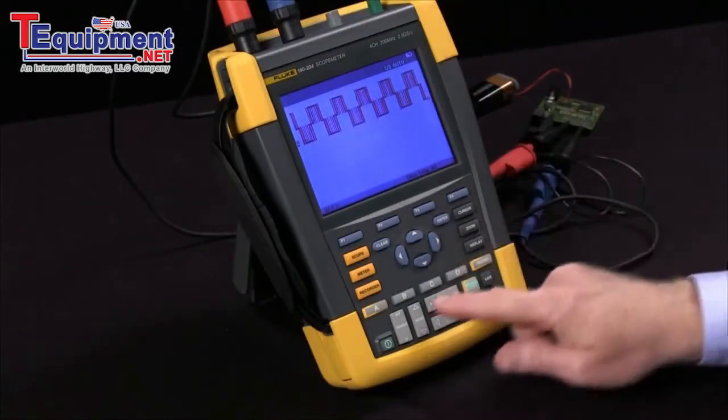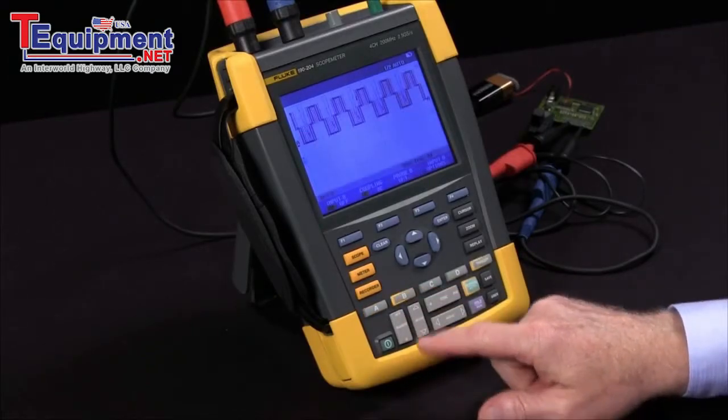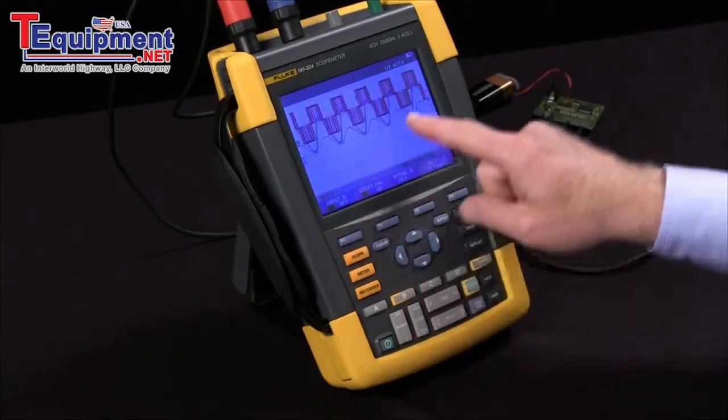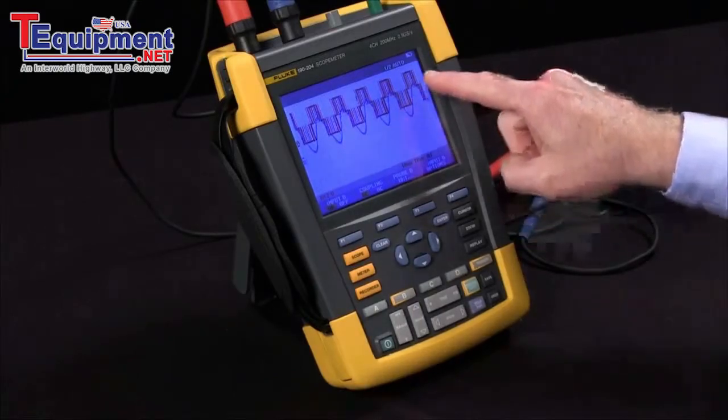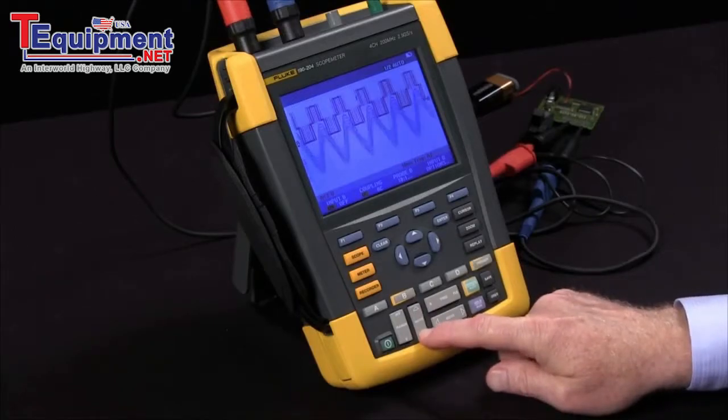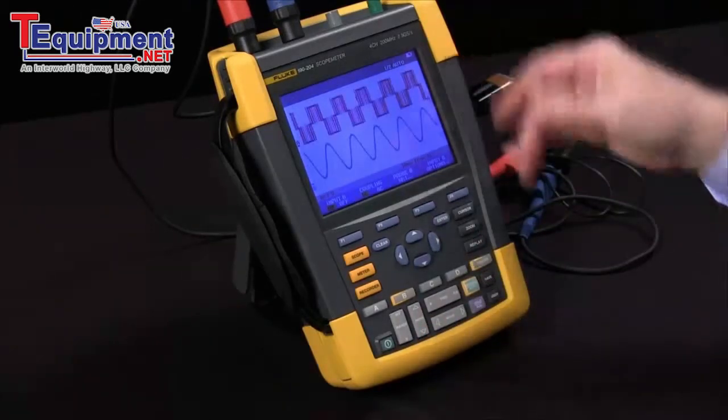To turn on channel B, I simply hit the B button. Channel B is on. You can see we have a measurement rocker. We can move that channel down with the move key. So I've got a nice clean display.